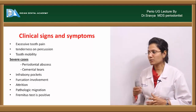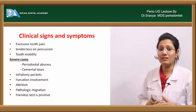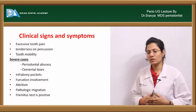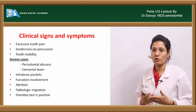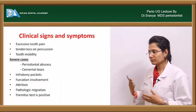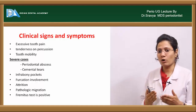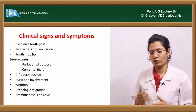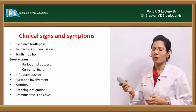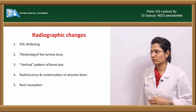The clinical signs and symptoms include excessive tooth pain, tenderness on percussion, and tooth mobility. In severe cases, you have periodontal abscess formation, sometimes even cemental tears. Infrabony pockets are one of the important signs of trauma from occlusion. Apart from that, furcation involvement, attrition, pathologic migration, and a positive fremitus test are also clinical signs.